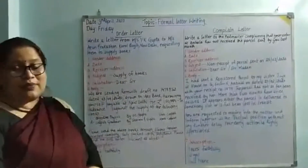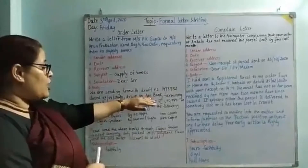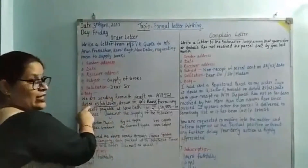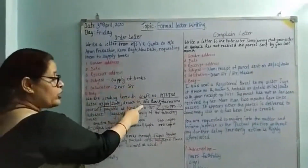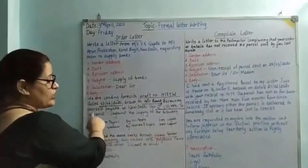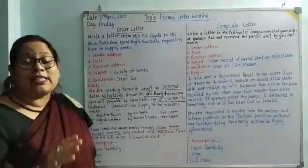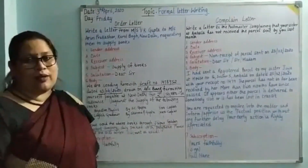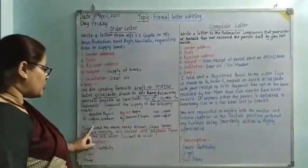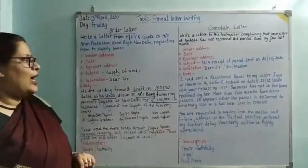When placing an order, you mention how much the amount is and which draft you are using, the date, which bank has been used for the transaction, the amount, the publisher, the books, and the number of copies required — all these details are very essential. Then you summarize by mentioning the transport company that will be used to deliver these goods. I hope this order letter format is clear.